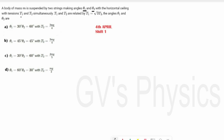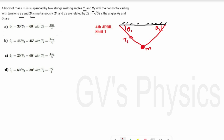The next one is also a most important question. A body of mass M is suspended by two strings making angles θ1 and θ2 with the horizontal ceiling, with tensions T1 and T2. We draw the diagram: two strings connect from the ceiling to the mass M, with the first string making angle θ1 and having tension T1, and the second making angle θ2 with tension T2. Given that T1 = √3 T2, we must find θ1, θ2, and T2.